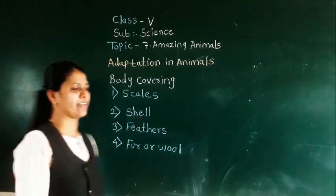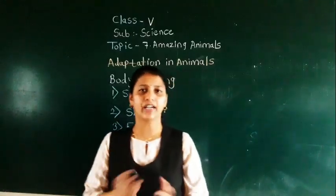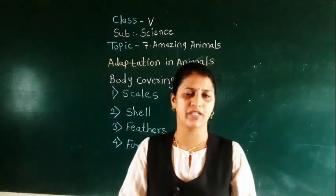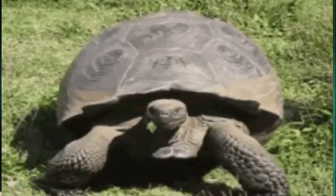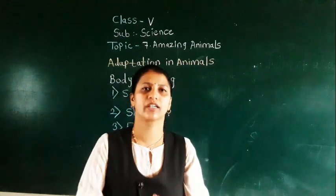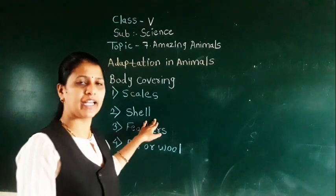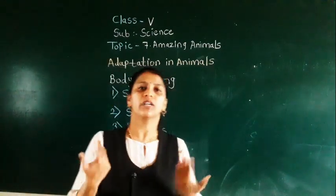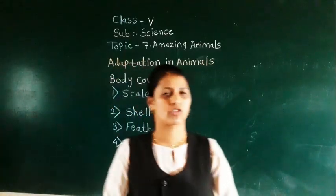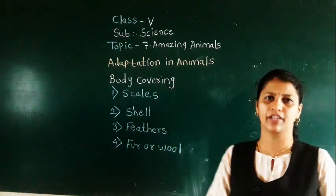Next — have you seen the tortoise or turtle? They have a hard covering on their body. What is the use of that? When an enemy attacks, they can protect themselves by hiding their body under this hard covering, which is called a shell. It is found in animals such as the tortoise and turtle — that hard covering on the body protects them from danger.